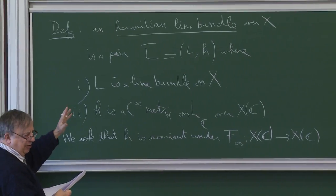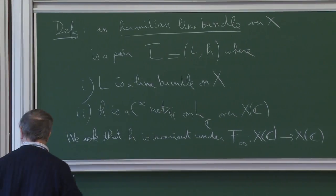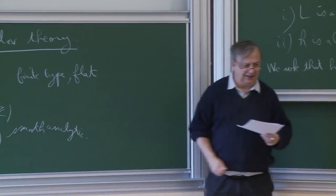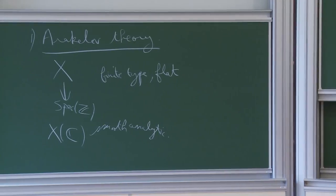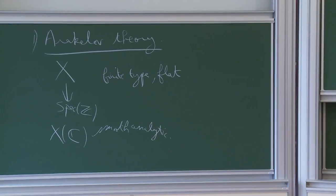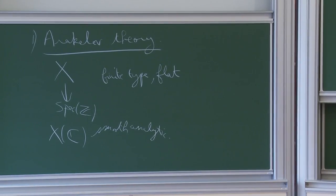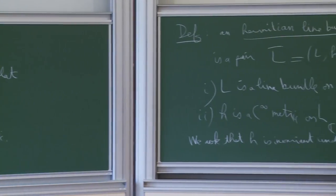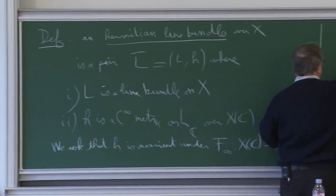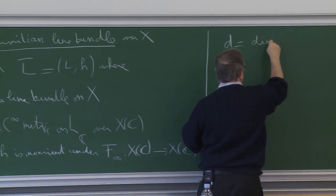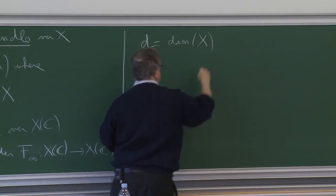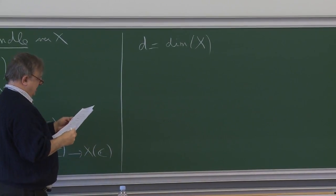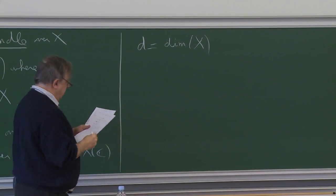This will be our object of study: Hermitian line bundles on arithmetic varieties. When I say arithmetic variety, I mean essentially this data. Let me give some examples. Let D be the Krull dimension of X, and we'll discuss examples according to the dimension.